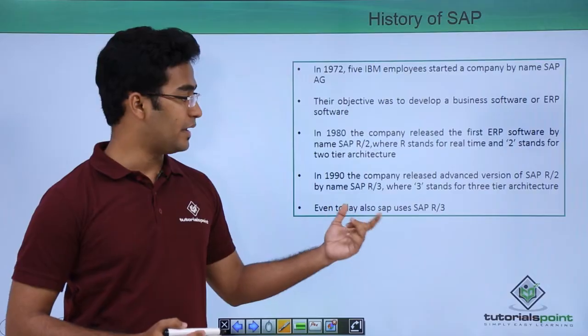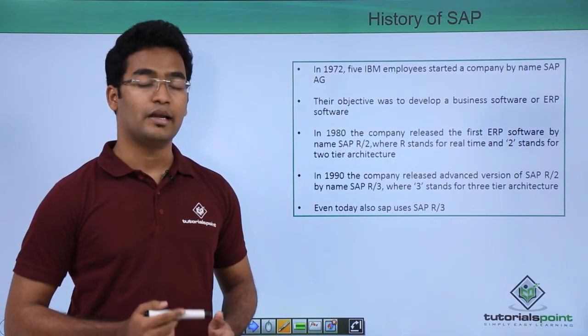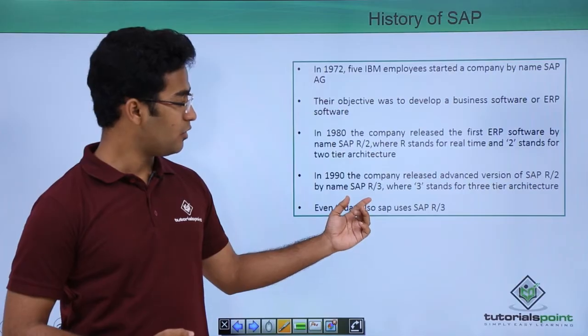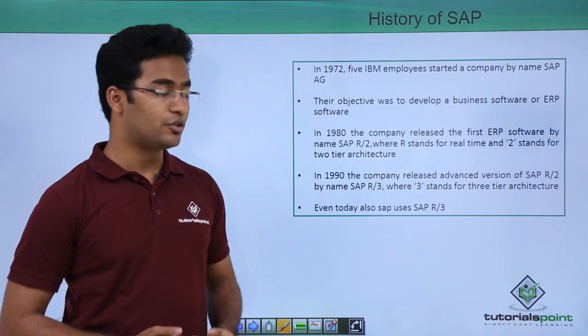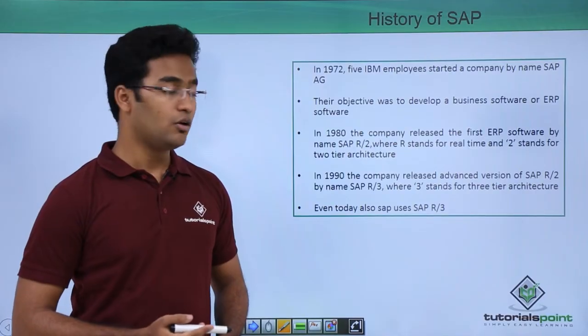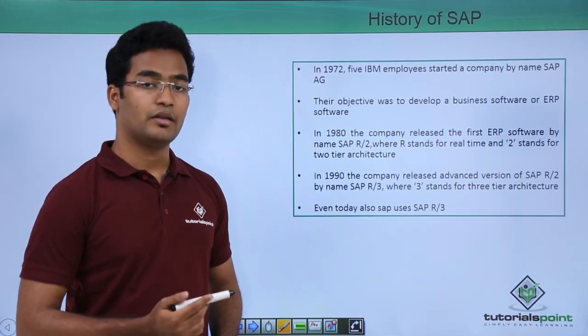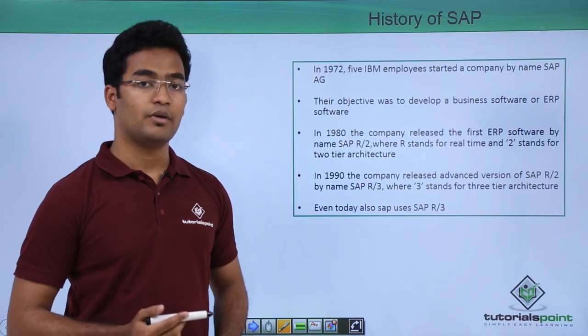In 1990 the company released their advanced version of SAP R2, that is SAP R3. Here also R3 stands for real time and 3 stands for three-tier architecture. So in this video we saw the basic introduction to SAP, and in the next video we will see the SAP architecture.